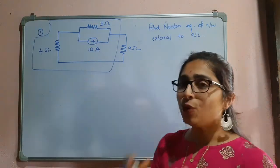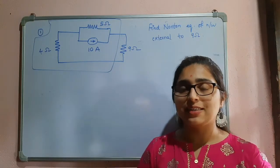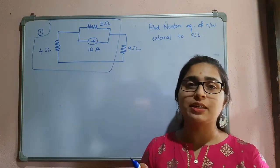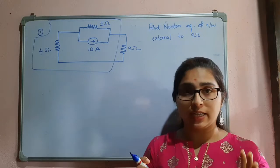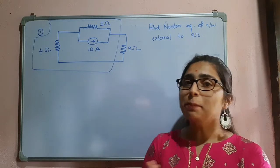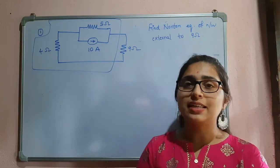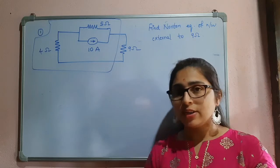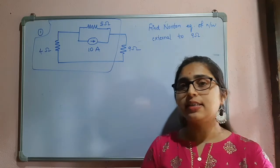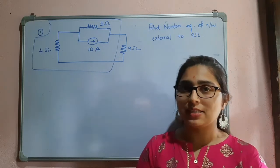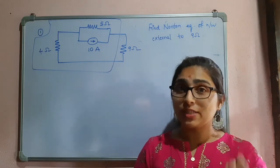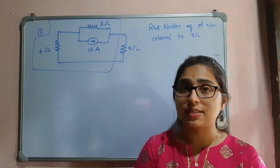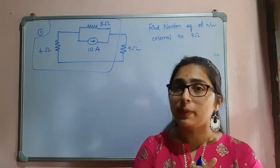So you know how to find the Norton's equivalent circuit. Norton equivalent circuit means you will have a current source in parallel with the resistance, that is Norton's resistance. Norton's resistance and Thevenin's resistance are both the same, and the procedure to find Norton's resistance or Thevenin's resistance will also be the same.